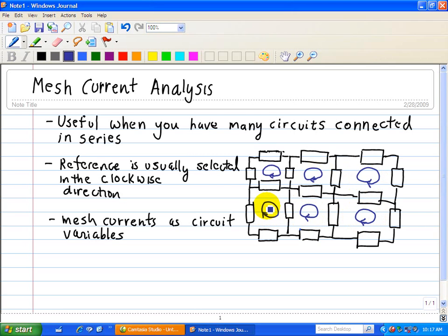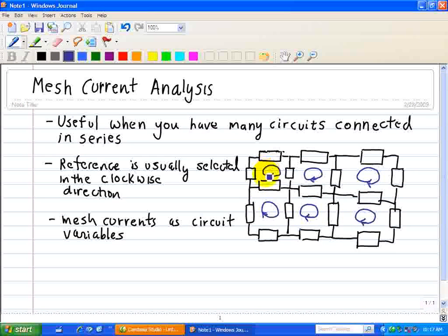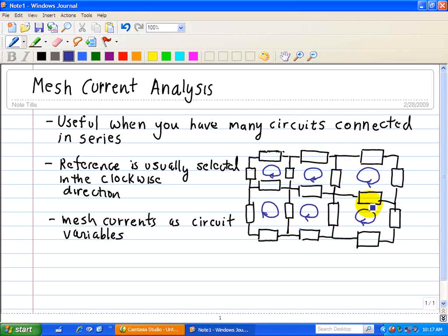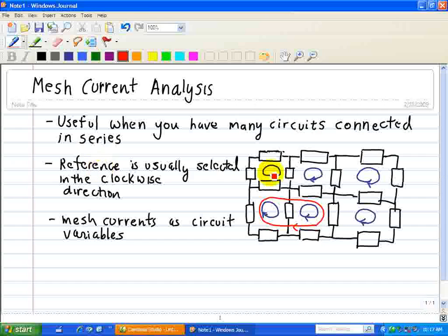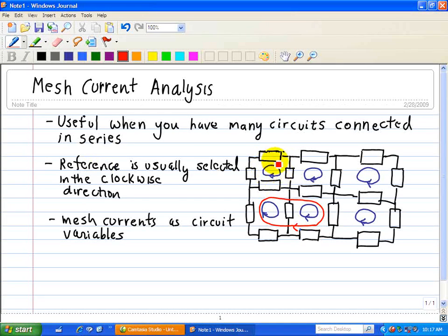Now a mesh is a special type of loop that does not enclose any elements. Here we did not enclose any of the elements. An example of enclosing an element, which is therefore not a mesh current, is this loop here, because we are enclosing this element. When we choose a reference direction, usually we choose it in the clockwise direction. We need to be consistent when we do the mesh analysis.